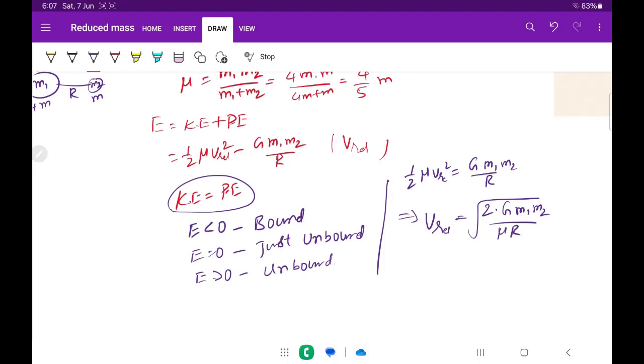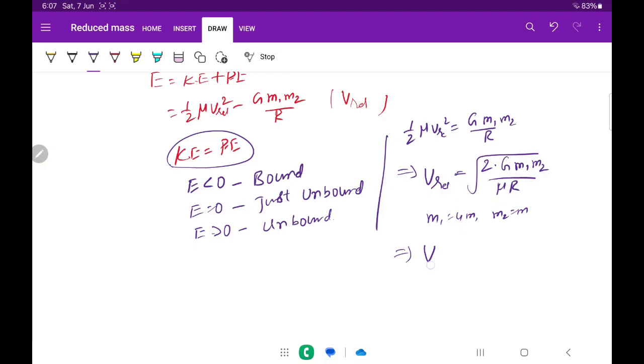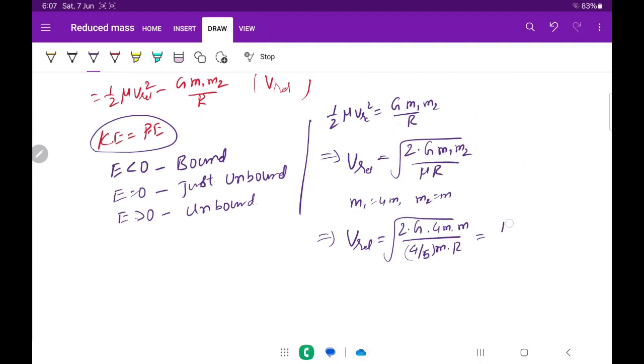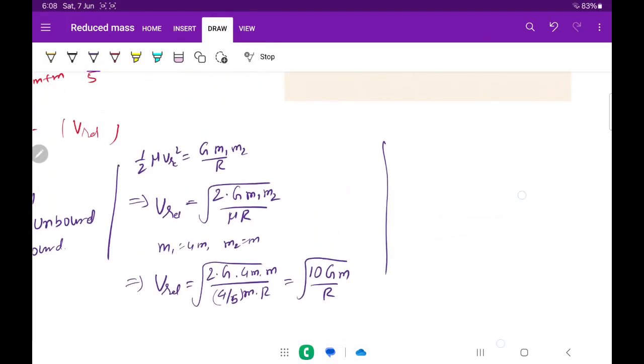Now I substitute m1 equals 4m, m2 equals m. Then v-relative will become square root of 2G times 4m times m divided by 4 by 5 m times r. We already found reduced mass. Finally, if I simplify, I will get square root of 10 capital G small m divided by r. This is the relative velocity. But what is our aim? We want to find the velocity of m1 alone.